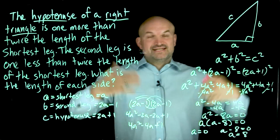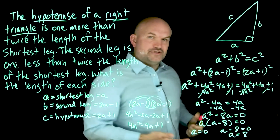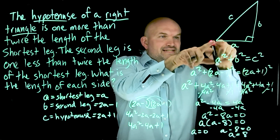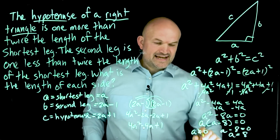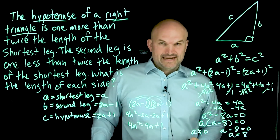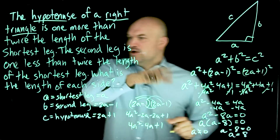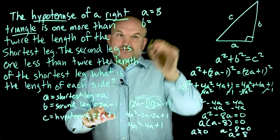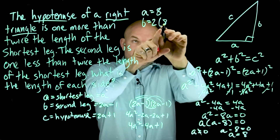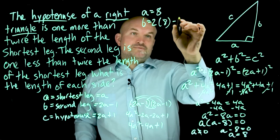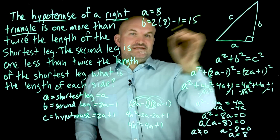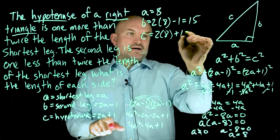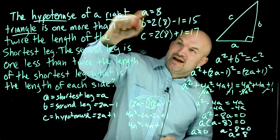The question asked for the length of each side. A is equal to 8. B equals 2 times 8 minus 1, which is 16 minus 1, equals 15. C equals 2 times 8 plus 1, which is 16 plus 1, equals 17. So we've found all three side lengths: A equals 8, B equals 15, and C equals 17.